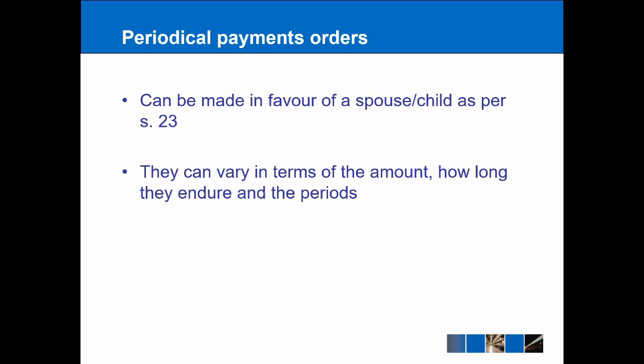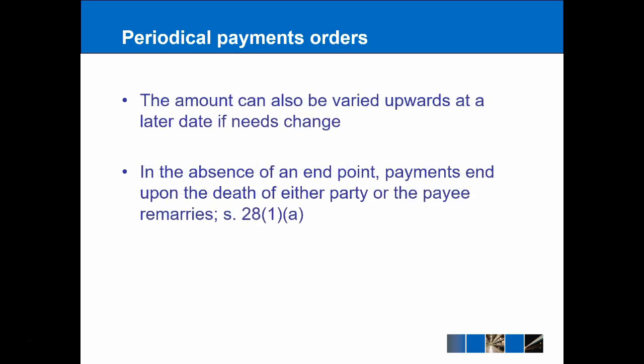Meanwhile, we also have periodical payment orders, which can be made in favor of a spouse or a child under Section 23. And as the name suggests, they're basically payments that are made during a particular period on a regular basis — so, for example, X amount of pounds paid over Y number of years or months. That amount can be varied upwards at any stage in order to meet any particular needs. And if there isn't an endpoint set by the court, then the payments are going to end on the death of either of the parties, or if the payee remarries. And that's covered under Section 28.